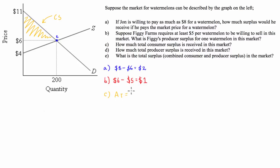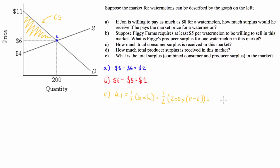The area of the triangle equals one-half times base times height. This gives us one-half times the base — the quantity at equilibrium, which is 200 — times the height, which is the maximum difference between the demand and the market price: 11 minus 6, which is 5. That's one-half times 1,000, so the total consumer surplus equals $500.